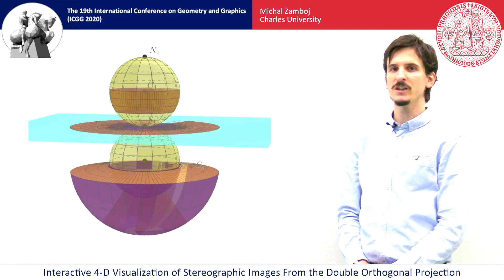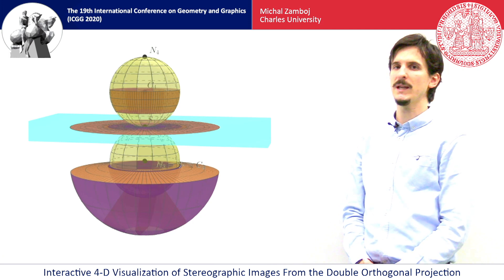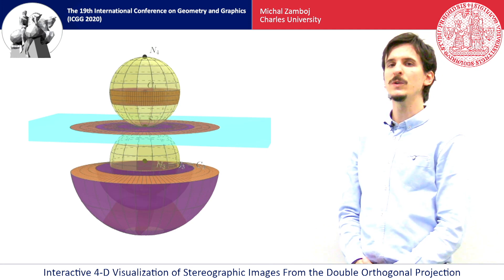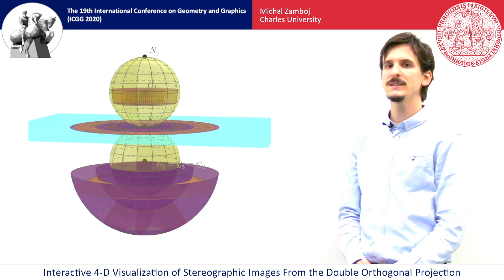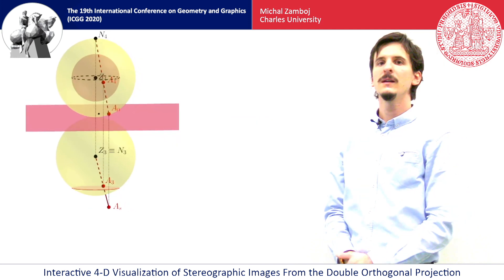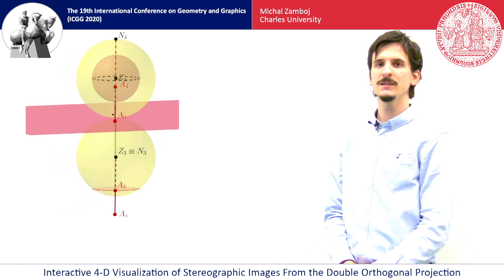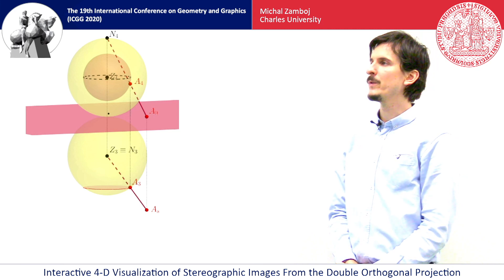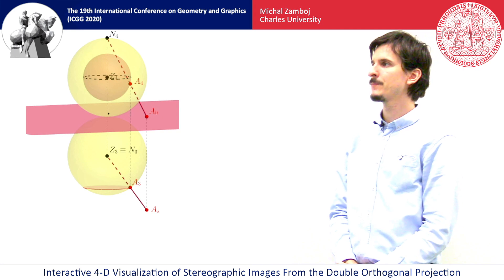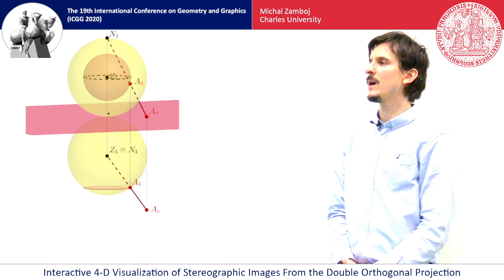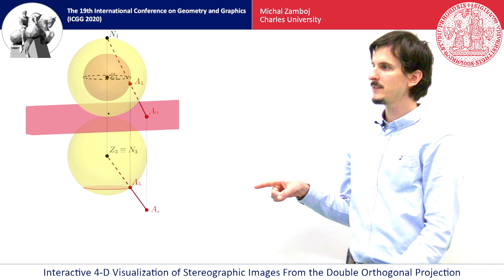The double-orthogonal projection is actually a kind of descriptive geometry method, so we can also use synthetic constructions to create stereographic images of objects. In the double-orthogonal projection we can use analogous methods to Monge's projection. Observe a point A on the three-sphere — it is actually located with some section which is a two-sphere. To find its stereographic projection, we connect point A with the north pole and find the intersection of this joining line with the XYZ free space. See the point A_S on the bottom — it is the stereographic image of point A.